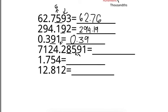And remember, if the number next to that 8 is greater than or equal to 5, you have to round up. So this number becomes 7124.29.